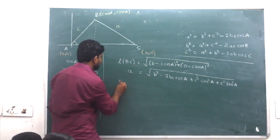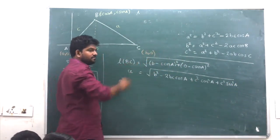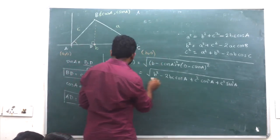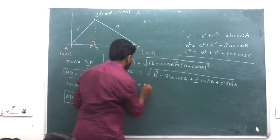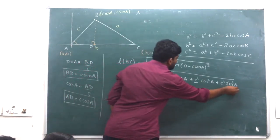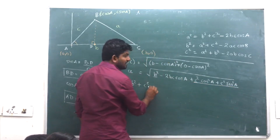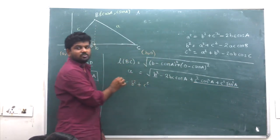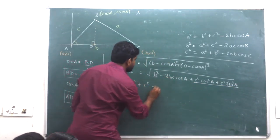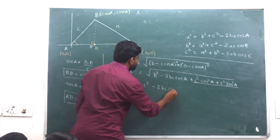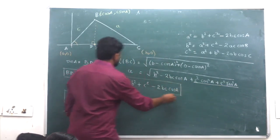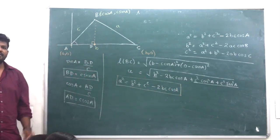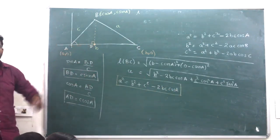Squaring both sides: a square. Arranging: b square plus c square. Since sin square a plus cos square a equals 1, this becomes c square minus 2bc cos A. Hence, the rule is proved. Similarly, we can prove b square and c square formulas.